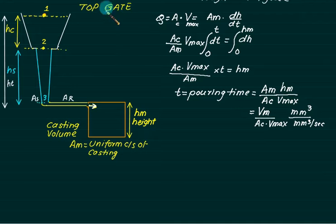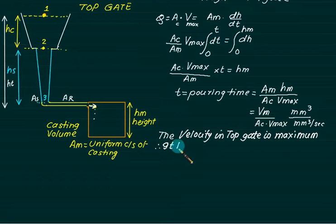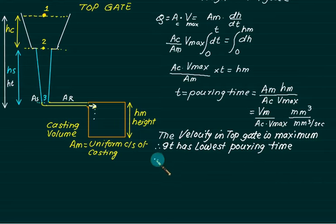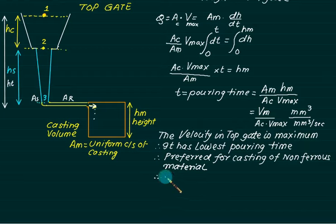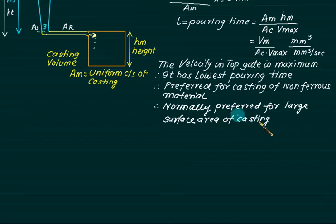The advantage of the top gate is that the liquid is falling from this side, so the velocity is almost constant and is maximum. If velocity is maximum and velocity is in the denominator, the pouring time is very small — it has the lowest pouring time. This is desirable, and therefore it is normally preferred for casting of non-ferrous material and for large surface area casting, where height is minimum.